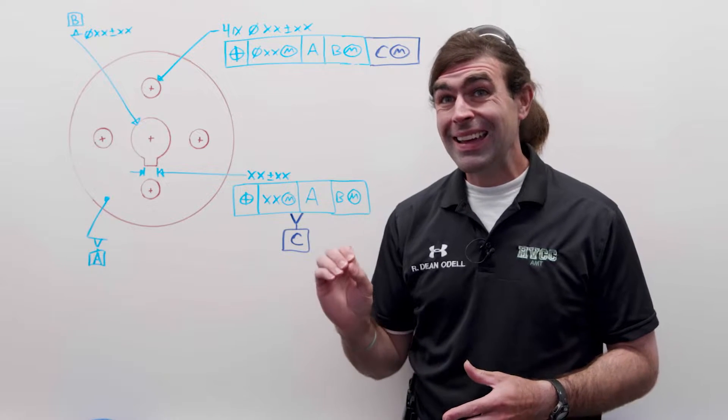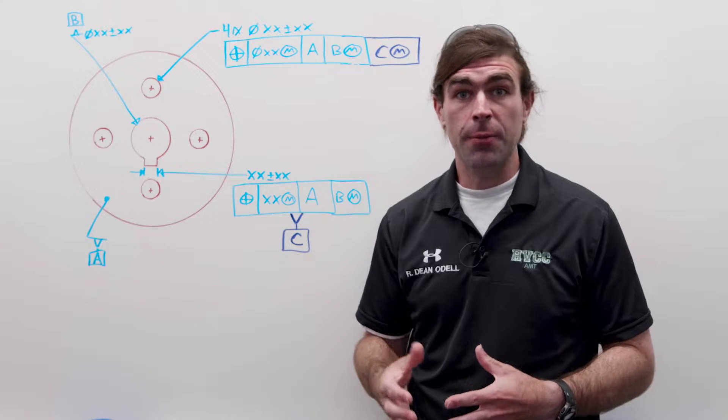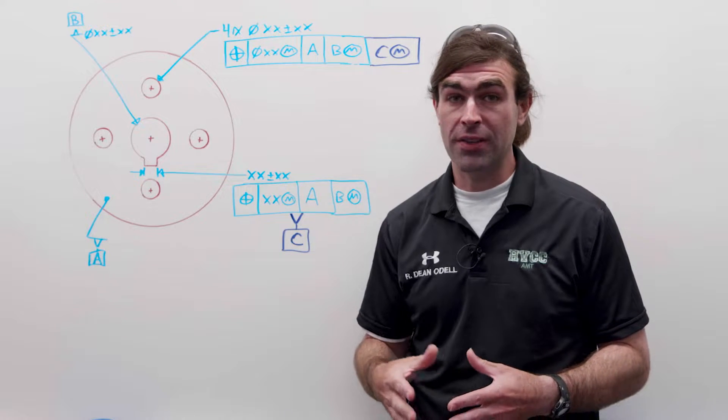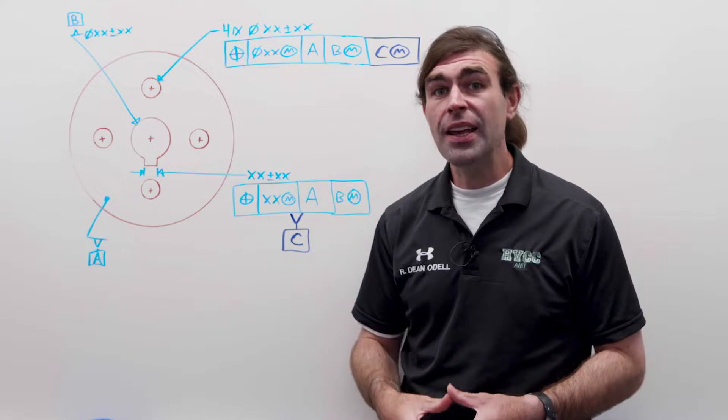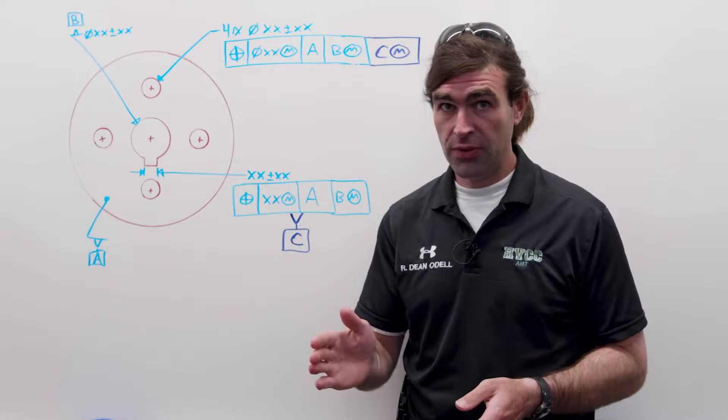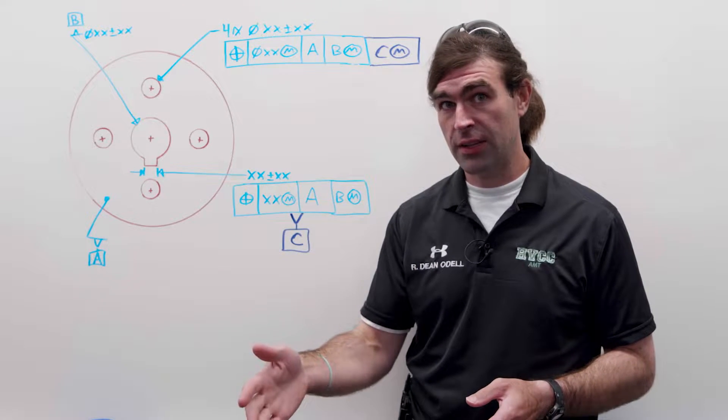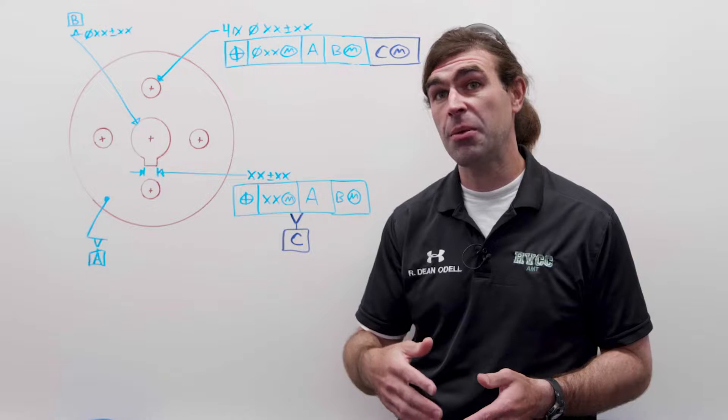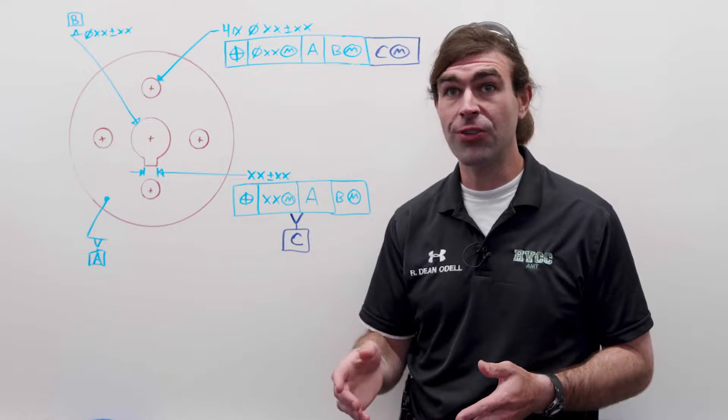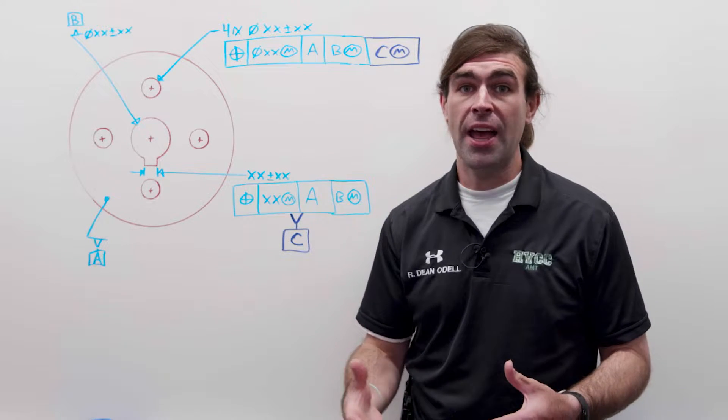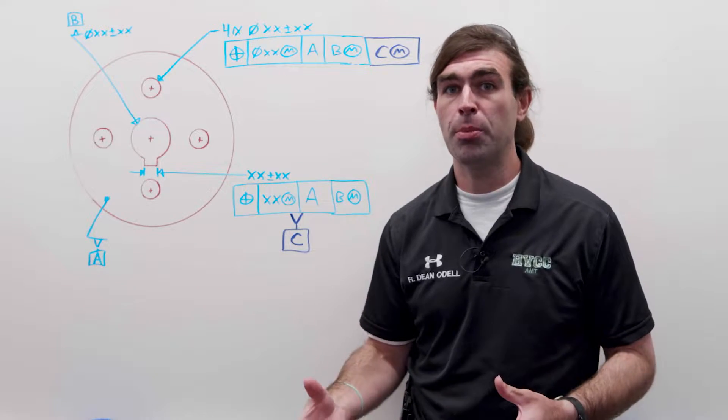Now, you don't have to have the datum C. What simultaneous requirements does is it says that if you have the same datums and the same datum precedents, so the same order, with the same material condition modifiers, then a single pattern is created out of multiple patterns.